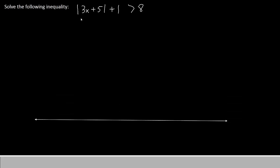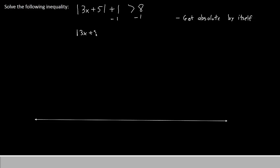Our inequality says: absolute value of 3x plus 5, plus 1, greater than 8. The first thing you want to do is get the absolute value sign by itself. This means we have to subtract 1 from both sides, so our absolute value still has 3x plus 5, and now it's greater than 8 minus 1, which is 7.